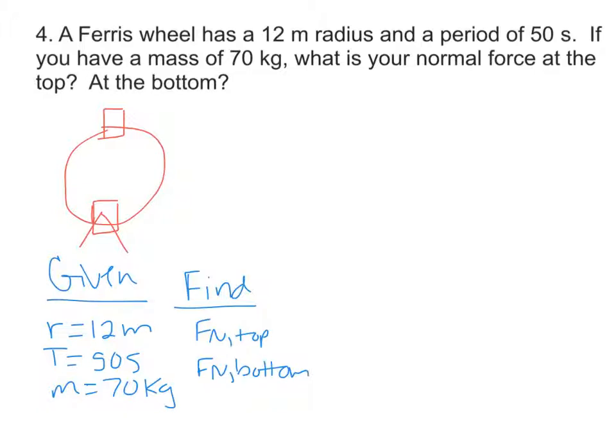So let's take a look at the top. So top of the Ferris wheel, we're right here. You're sitting in the car, and we want to draw a force diagram. So you're sitting in the seat on the Ferris wheel. You're obviously going to have your weight, Fg. And then you're going to have your normal force pointing up.